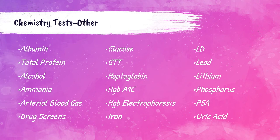Other tests performed in the clinical chemistry laboratory include: albumin (decreased levels indicate malnutrition or liver/kidney disorders), total protein (decreased levels indicate liver or kidney disorders), alcohol levels and drug screens, ammonia (increased levels can indicate severe liver disorders), arterial blood gases (tests pH, oxygen, and carbon dioxide levels), glucose and glucose tolerance tests (GTT) to detect blood sugar levels and diagnose diabetes, hemoglobin A1c for monitoring diabetes, and haptoglobin to evaluate hemolytic anemia.